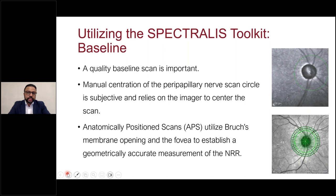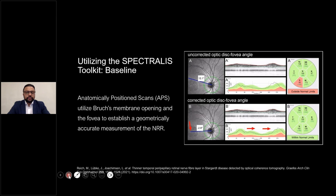For RNFL measurements, a quality baseline scan is important because we're tying all follow-up scans to that baseline. In circumpapillary scans on most instruments, the imager must manually center the scan on the optic nerve, introducing subjectivity. Anatomically positioned scans are better because they utilize landmarks unique to the individual — Bruch's membrane opening and the fovea — to establish a geometrically accurate measurement of the neuroretinal rim. There is a lot of variability in where the fovea lies, and the range of angles for the fovea-to-BMO axis can vary up to 35 degrees between individuals or even between eyes.